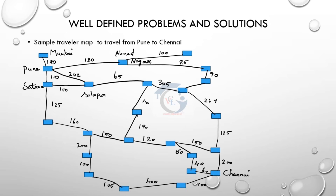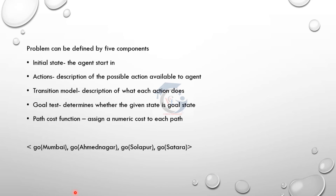Well-defined problems and solutions: this is a sample traveler map. If we travel around the city, we can find out the city and find the number of distances. In the city, we have nearby places: Mumbai, Satara, Solapur, and Hamath. The nearest map shows nearby places — Mumbai, Hamath, Salapur, and Satara. We can choose the route with five components.